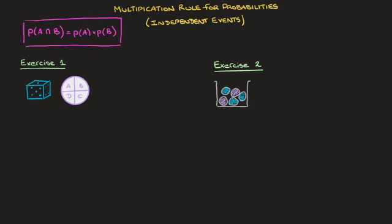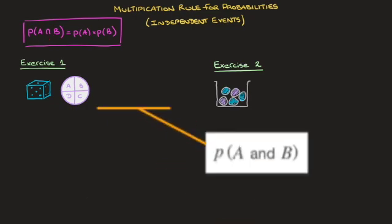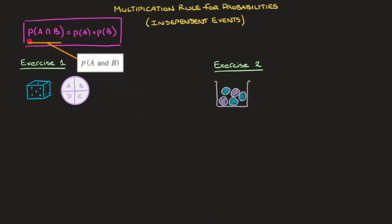If you're unfamiliar with this symbol — which looks like an upside-down U in between A and B — you can think of it as meaning AND. So you could read this as: the probability of A AND B occurring equals the probability of A times the probability of B.